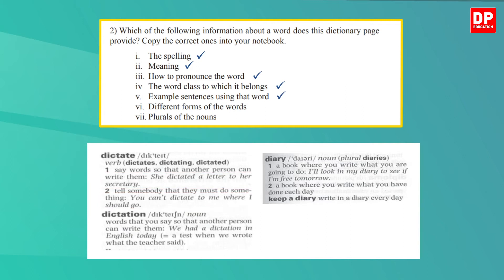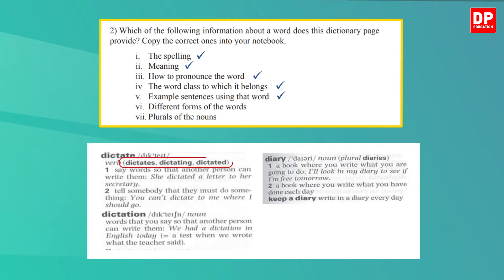Now the sixth one — different forms of the verbs. Look at the first entry: it's 'dictate.' Can you see the different forms of 'dictate'? They are given within brackets as 'dictates,' 'dictating,' and 'dictated' — that means the third person singular form, the -ing form, and the past tense form. So let's tick that one too. Now the last one: plurals of nouns. Do you find the plural of 'diary' here? Yes, it is there as 'diaries.' So we can tick this one too.